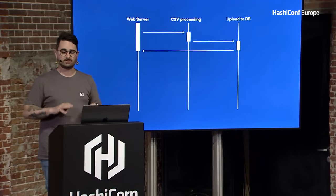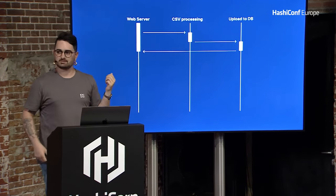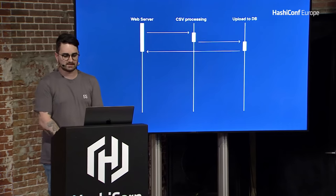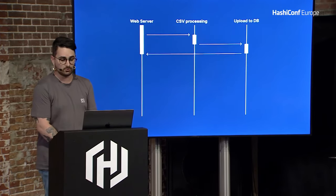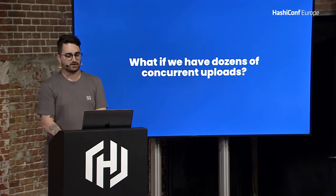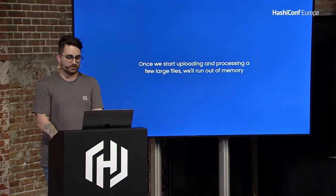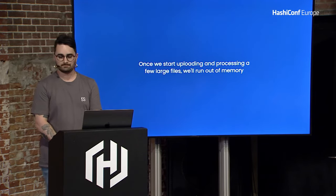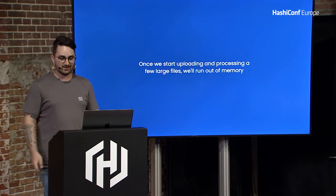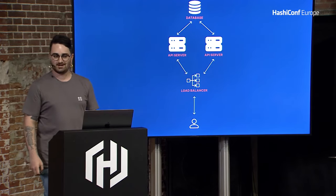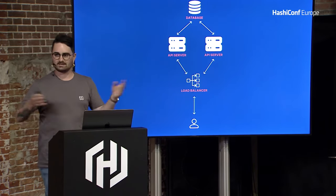Internet connection here in Italy is really, really bad, so you don't want to go that way. Also, this is a synchronous operation, which means you are blocking people from uploading multiple stuff concurrently. The biggest problem we pointed out during the review for this architecture was: what happens if we have dozens of concurrent uploads? We start uploading and processing a few large files, and we run out of memory. The most advanced junior developers said, why don't we just take a load balancer? We create a couple of servers, and if one is busy, we direct to the other one, and we can scale horizontally forever.